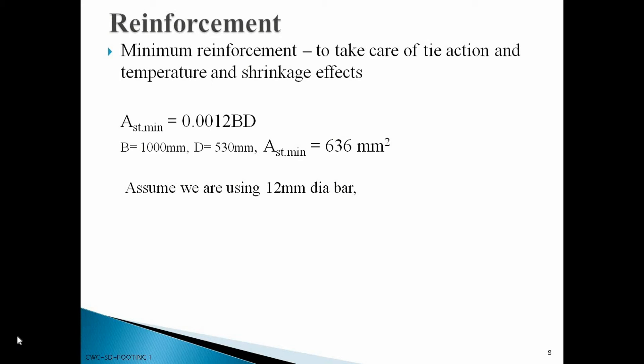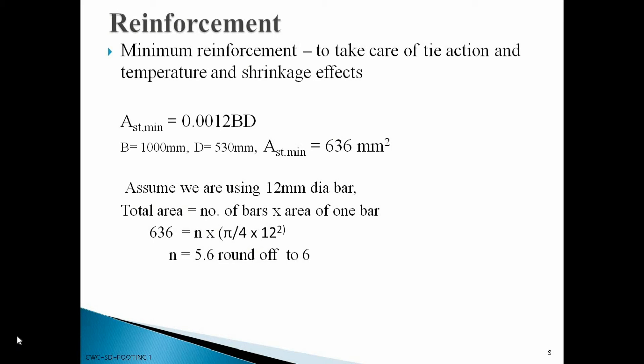We now select the diameter of bar to use and divide the minimum area by the area of one bar to get the number of bars required. Using 12 mm diameter bars, the calculation after rounding off gives 6 bars. The actual area of reinforcement with 6 numbers of 12 mm bars is then calculated. Since the footing dimension is the same in both directions, we provide the same reinforcement in the other direction as well — 6 numbers of 12 mm diameter bars both ways.